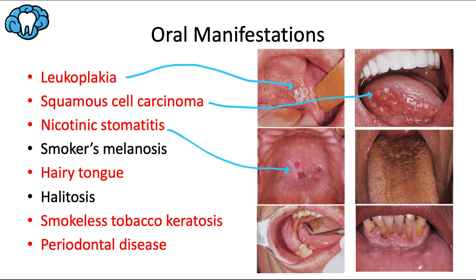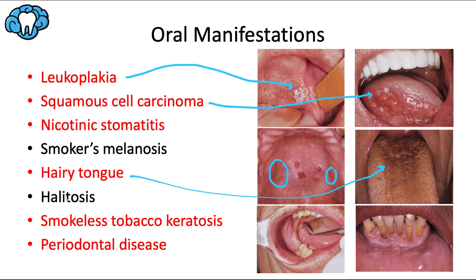Nicotinic stomatitis refers to a whitish palate with red dots that are inflamed salivary gland openings, and it's most commonly found in pipe users and reverse smokers — people who put the smoked end of the cigarette in their mouth. Smoker's melanosis refers to a brownish discoloration of the oral mucosa, visible in parts of the palatal vault. Hairy tongue refers to dark staining of the filiform papillae. Halitosis, or bad breath, kind of explains itself as to why we would expect it in a smoker.